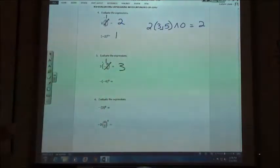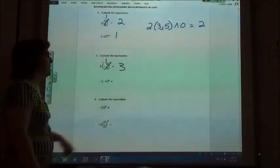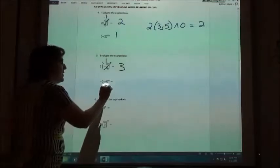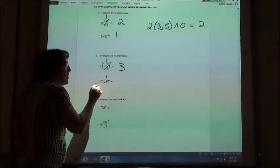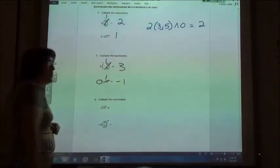How about minus a negative 4 to the 0 power? I don't know. Will it be negative 1? It will be because this part of it is equal to 1, and then the minus is in front, so it's negative 1.